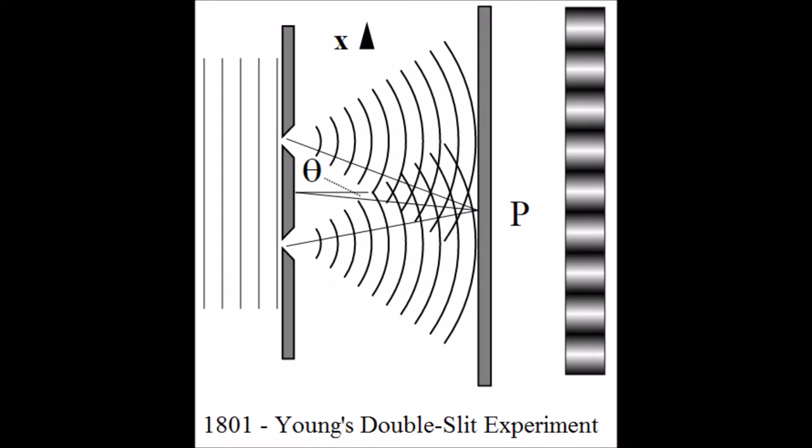The dawn of interferometry started in 1801 when Young used his double-slit experiment to demonstrate the wave-particle duality of light.